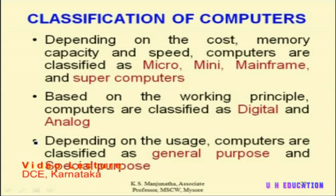How can computers be classified? Depending on price, storage capacity, and speed of working, computers are classified into four categories: microcomputer, mini computer, mainframe computer, and supercomputers. This classification is based on cost, memory, and speed. Based on the working principle, computers are classified as either a digital computer or an analog computer. And depending on the purpose for which they are designed — whether for a general application or a specific task — they are classified into general purpose computers and special purpose computers.